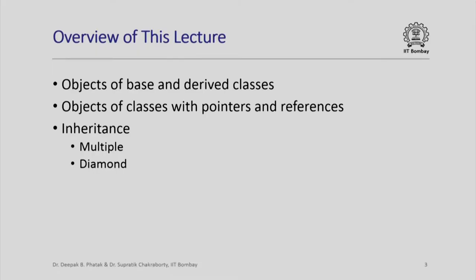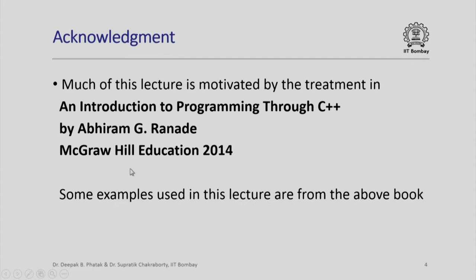In this lecture we are going to look more closely at how objects of base and derived classes are related, what can and cannot be done with them. We will also look at objects of classes with pointers and references, and we will look at some special kinds of inheritance called multiple inheritance and diamond inheritance. Much of this lecture is motivated by the book 'An Introduction to Programming through C++' by Abhiramji Ranade, published by McGraw Hill Education, 2014.